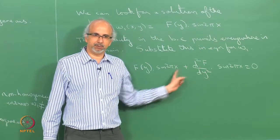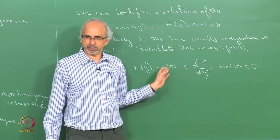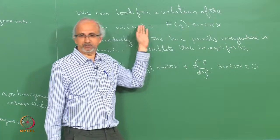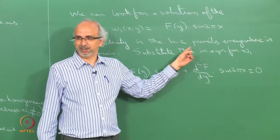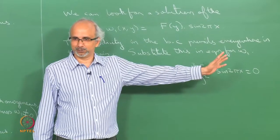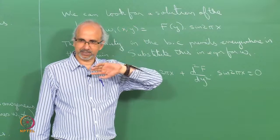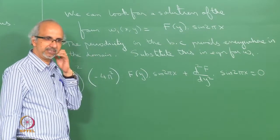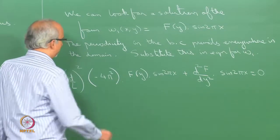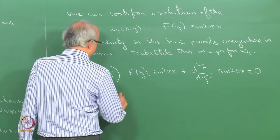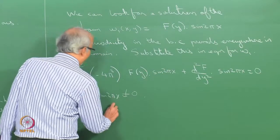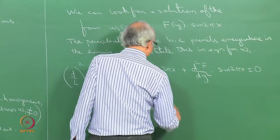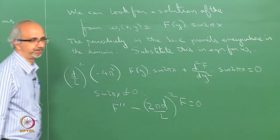sin(2πx) is present in both terms and is non-zero, so we can factor it out. If this had been a first-derivative equation rather than a second derivative, such a solution would not have existed because cosine and sine could not have been factored out. The fact that I have a diffusive, second-derivative process — viscosity — allows this. So sin(2πx) cancels, and I get: f'' minus (2π·d/L)² · f = 0.